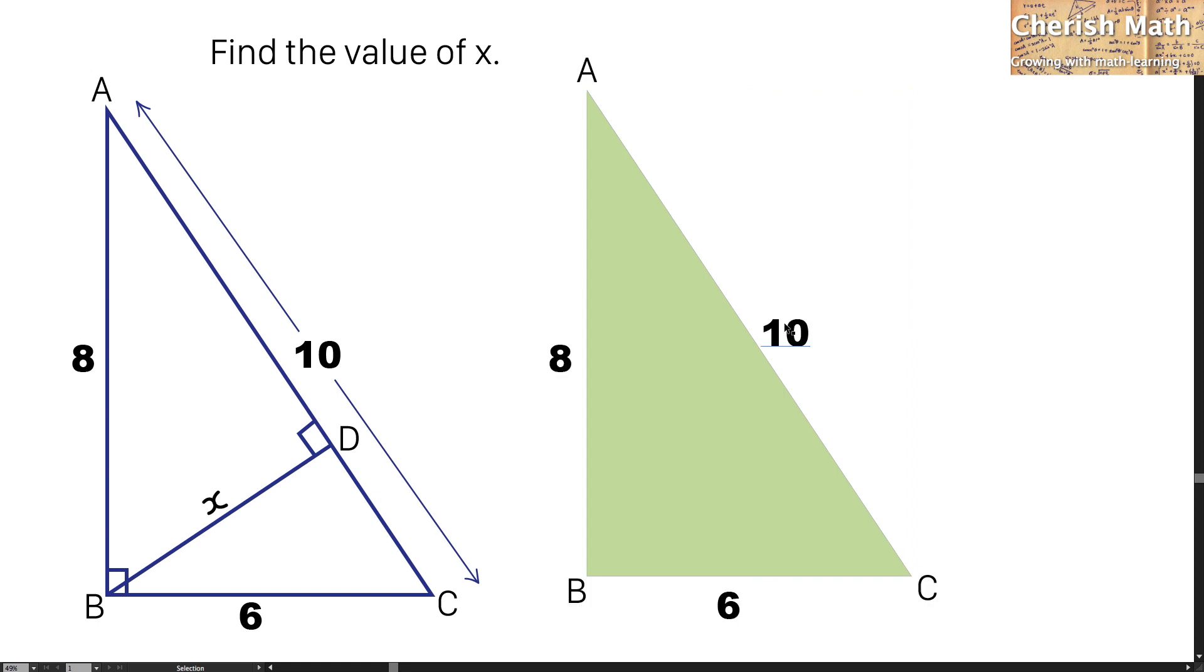Next, I'm going to label triangle ADB in red color and retrieve it to place it side by side with triangle ABC.